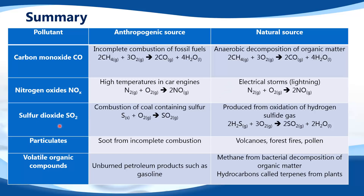Sulfur dioxide: anthropogenic source is combustion of coal containing sulfur; natural source is oxidation of hydrogen sulfide gas. Particulates: anthropogenic source is soot from incomplete combustion; natural sources include volcanoes, forest fires, and pollen.